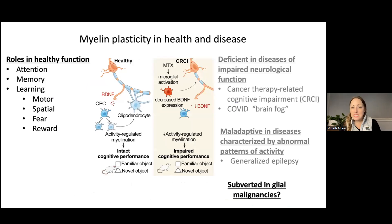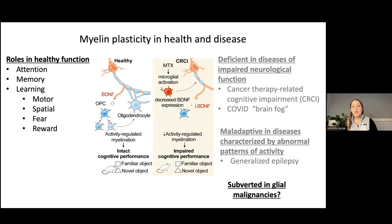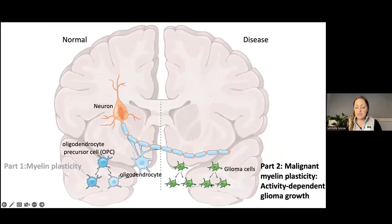Myelin plasticity plays roles in healthy cognitive function, can be deficient in diseases of impaired cognitive function, and can conversely be maladaptive when aberrantly upregulated. But what happens in brain cancers that arise from oligodendroglial precursor cells? Might the same powerful interactions between neurons and glial cells be subverted in the context of glial malignancies like glioblastoma and diffuse midline gliomas? I'm going to focus the second half of my talk on this idea of malignant myeloplasticity — activity-dependent glioma growth.